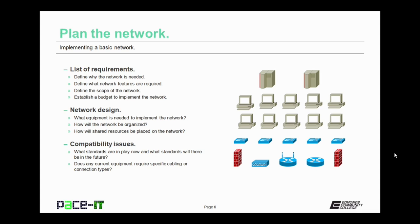Once you know why the network is needed and what features are required, you can work on network design. In network design, you need to determine what equipment is needed to implement the network. Part of the design is also how the network will be organized and how shared resources will be placed on the network. When planning the network, you should also consider compatibility issues — you need to know what standards are in use now and what standards there will be in the future.